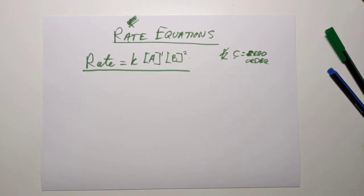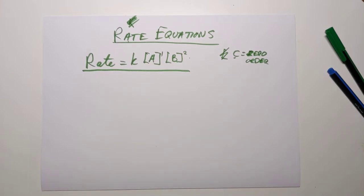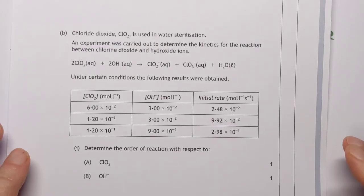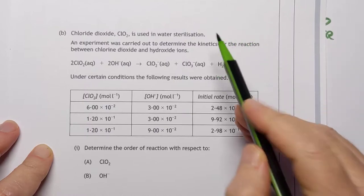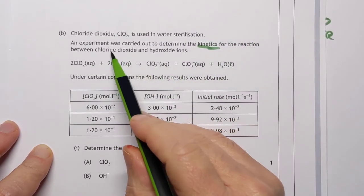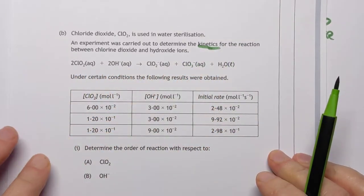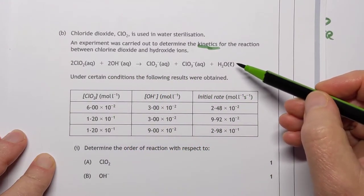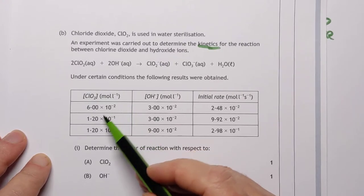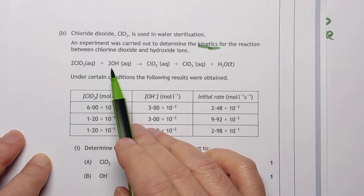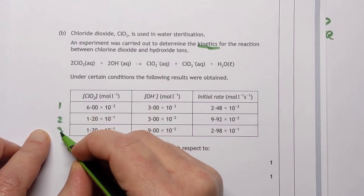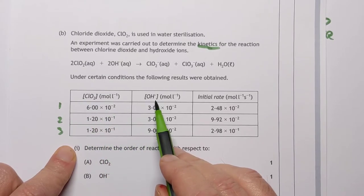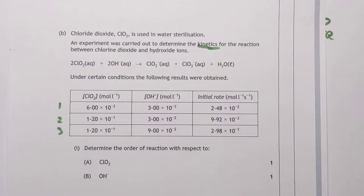Let me fish out an actual SQA example, including some nasty maths I warned you about. We've got a question on chlorine dioxide, used in water sterilisation. An experiment was carried out to determine the kinetics for the reaction between chlorine dioxide and hydroxide ions. Please remember this is the overall reaction — we can't get information from the overall reaction, we must do the experiments. We have three reactions where we change the concentration of ClO₂ and OH⁻ and measure the rate.